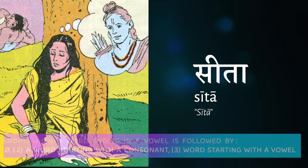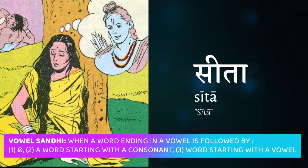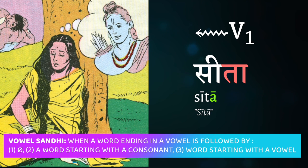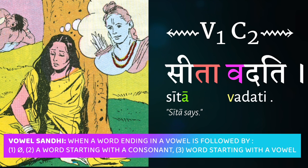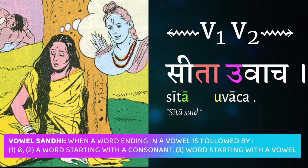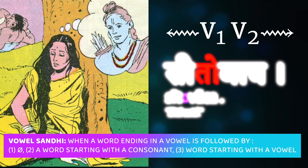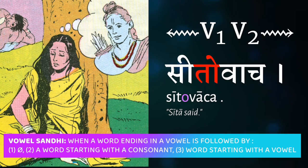On to vowel sandhi. By vowel sandhi, we mean what happens when a vowel comes at the end of a word and is followed either by nothing, or by another word that starts with a consonant, or in the third case, a word that starts with another vowel. Let's look at each of these cases independently.